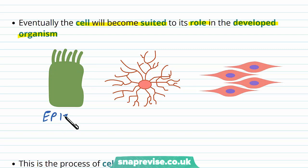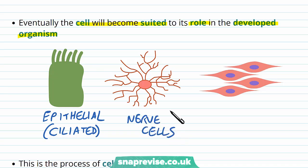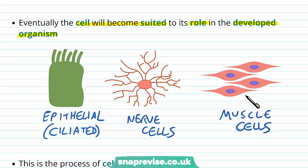For example, epithelial cells — and specifically ciliated epithelia — for wafting mucus through airways and different tubes. Nerve cells for communication and electrical propagation of action potentials. And muscle cells for contraction and moving either limbs, the cardiac muscle, or muscle found in hollow organs. So cells become very suited to their function, going through changes in their shape and their makeup to carry out these functions.